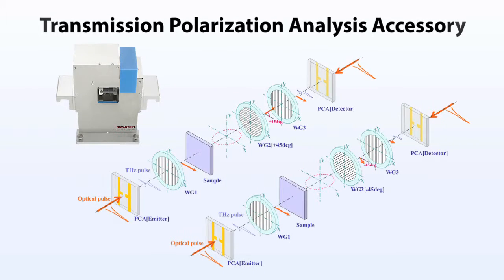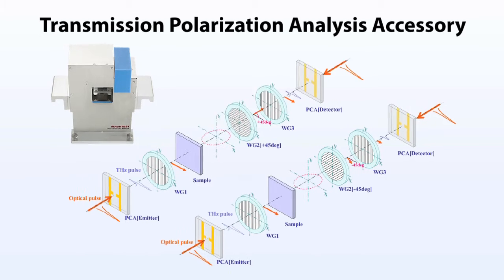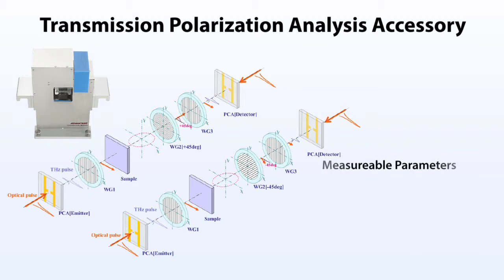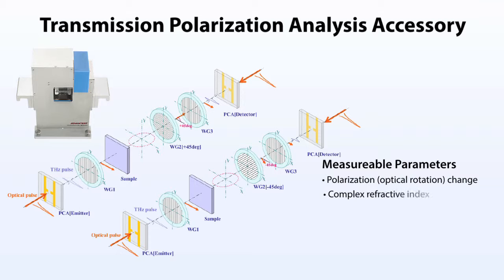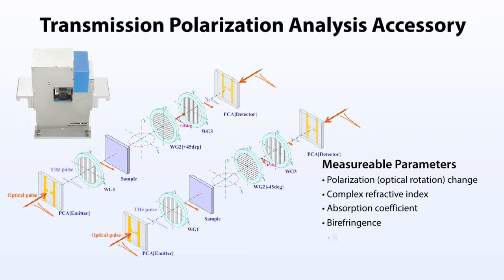The transmission polarization accessory uses a series of three linear polarizers to read out optical rotation angles. The first and third polarizers are set to the polarization plane of the initial terahertz pulse. Optical rotation is measured by combining two sets of data obtained with plus 45 degree and minus 45 degree settings of the second polarizer.